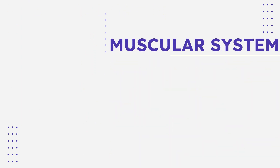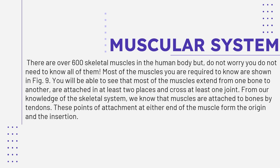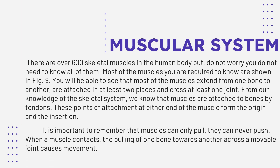We have the muscular system. There are over 600 skeletal muscles in the human body, but do not worry — you do not need to know all of them. Most of the muscles you are required to know are shown in figure 9 in your module. You will be able to see that most of the muscles extend from one bone to another, are attached in at least two places, and cross at least one joint. From our knowledge of the skeletal system, we know that muscles are attached to bones by tendons. These points of attachment at either end of the muscle are called the origin and the insertion.